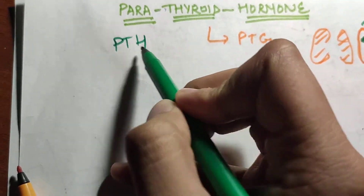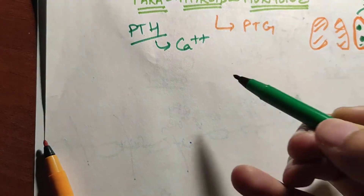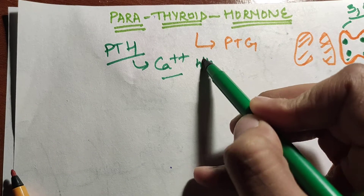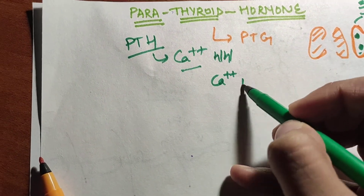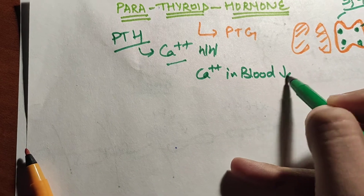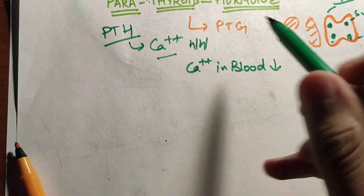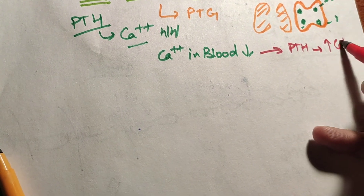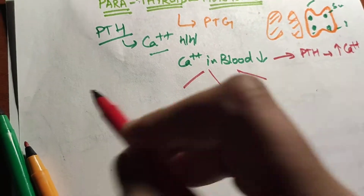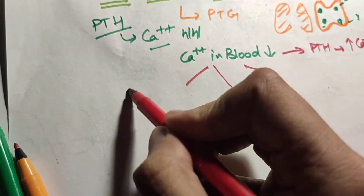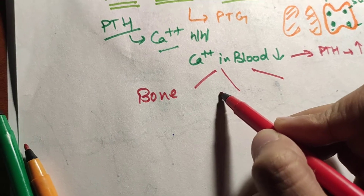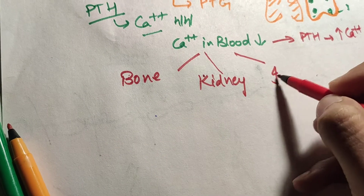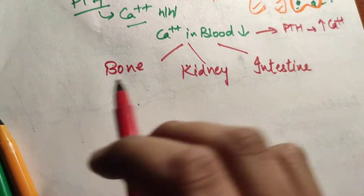Parathyroid hormone is a calcium homeostatic hormone. When the calcium level in the blood decreases, this parathyroid hormone is secreted and it elevates the calcium level. It acts on three organs: bone, kidney, and intestine.